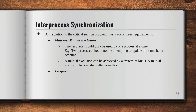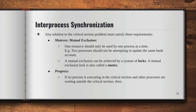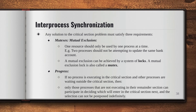The second requirement for solving the critical section problem is progress. It means that if no process is executing in the critical section and other processes are waiting outside the critical section, then only those processes that are not executing in their remainder section can participate in deciding which will enter the critical section next. And the selection cannot be postponed indefinitely. That's your progress, your second requirement.